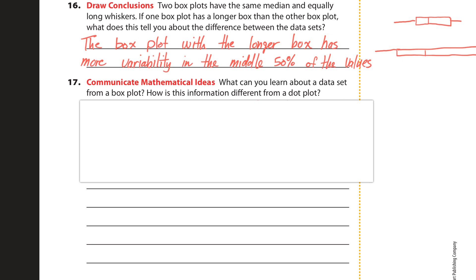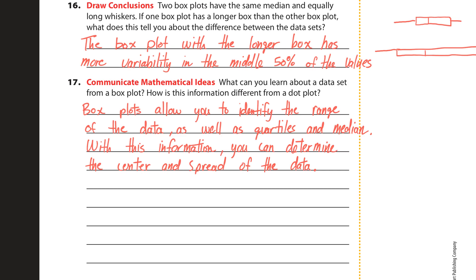Number 17: what can you learn about a data set from a box plot, and how is this different from a dot plot? Box plots allow you to identify the range of the data as well as the quartiles and median, giving you detailed information. With this information you can determine the center and spread of the data.